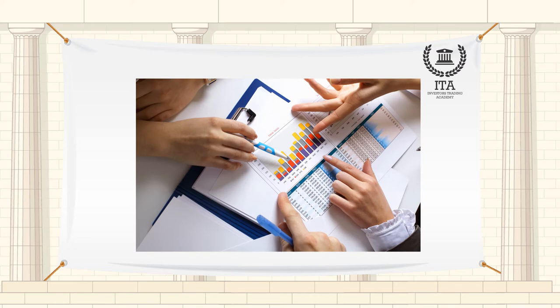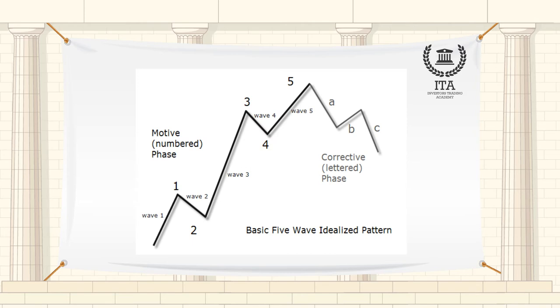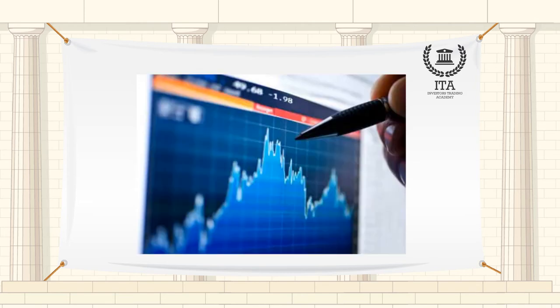Elliott Wave Principle measures investors' psychology, which is the real engine behind the stock market. When people are optimistic about the future of a given issue, they bid the price up. Elliott isolated 13 waves or patterns of directional movement that reoccur in markets and are repetitive in form but are not necessarily repetitive in time or amplitude.